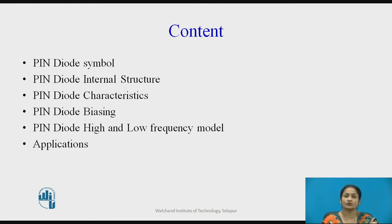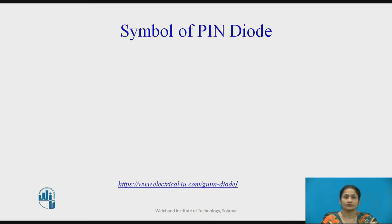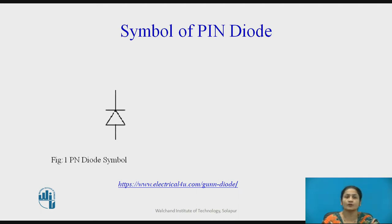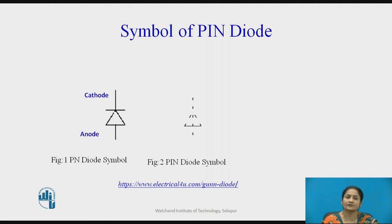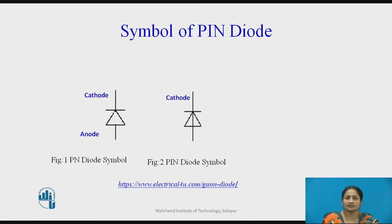These are the contents which are going to be covered in this video. Before starting with the description of the PIN diode, let us first see what symbol we use for representing it. Usually, for a diode, we have a symbol used for a normal P-N junction diode. Now, the PIN diode also has two terminals: anode and cathode. Similar to a P-N junction diode, the PIN diode is represented similarly, with the only difference being a center line between the symbol.